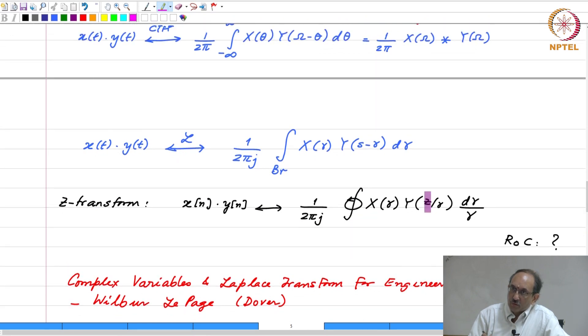Therefore, here if you put Z equal to 1, then that will be the sum over all n of x of n times y of n. This convolution evaluated at Z equal to 1, that is all. Again, we have to make sure that Z equals 1 is part of the region of convergence, only then can we evaluate this at Z equal to 1.